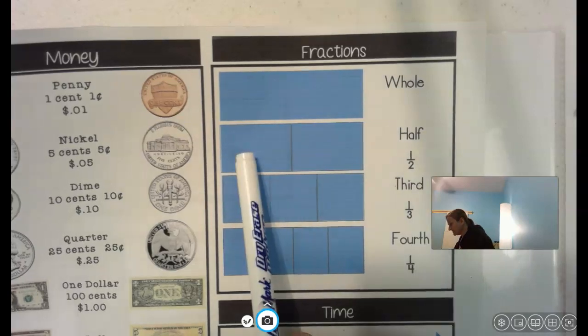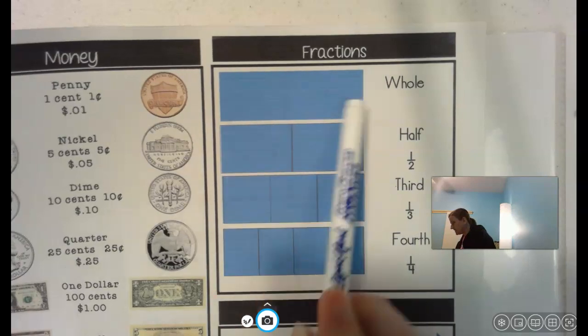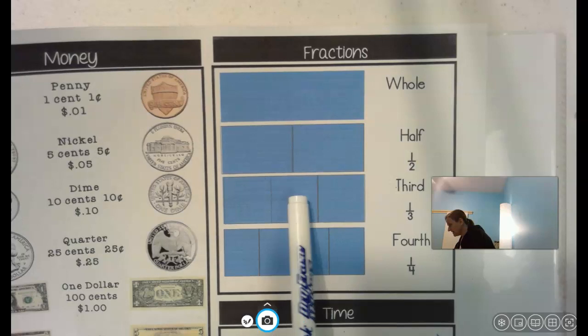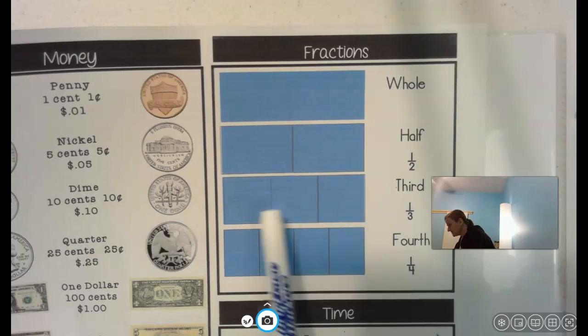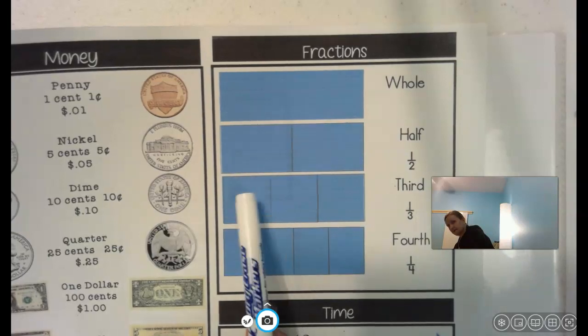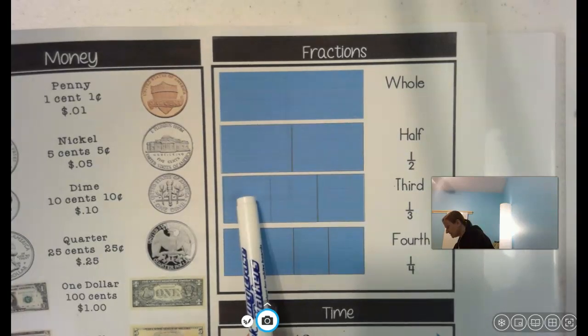If they take that same whole and divide it into three equal parts, one, two, three, they cut it into thirds. Third means three. If I give you one of these, that means one third.